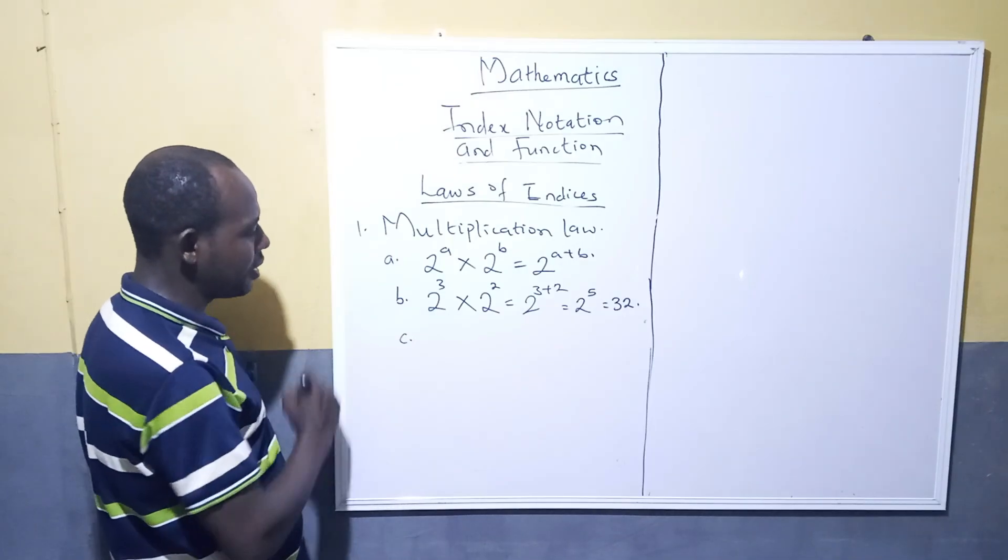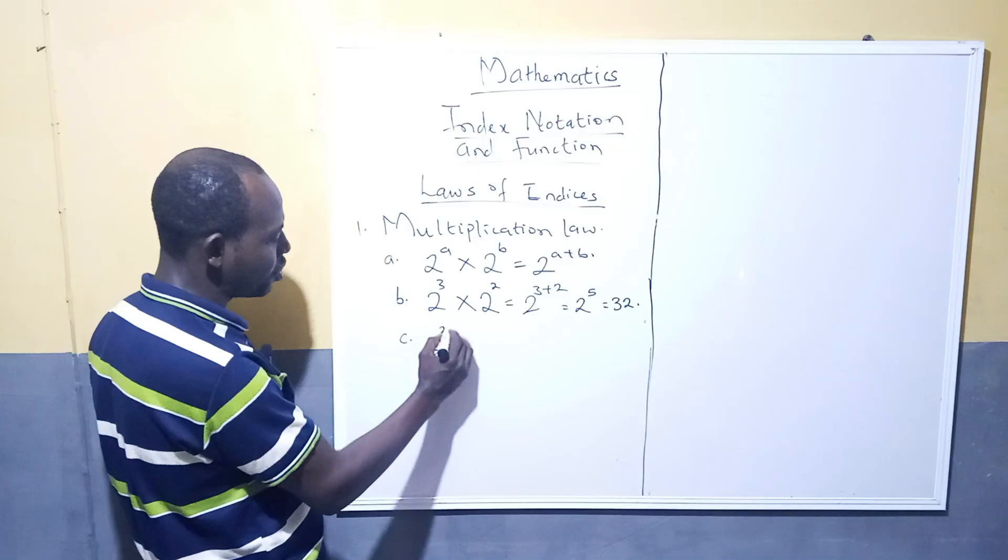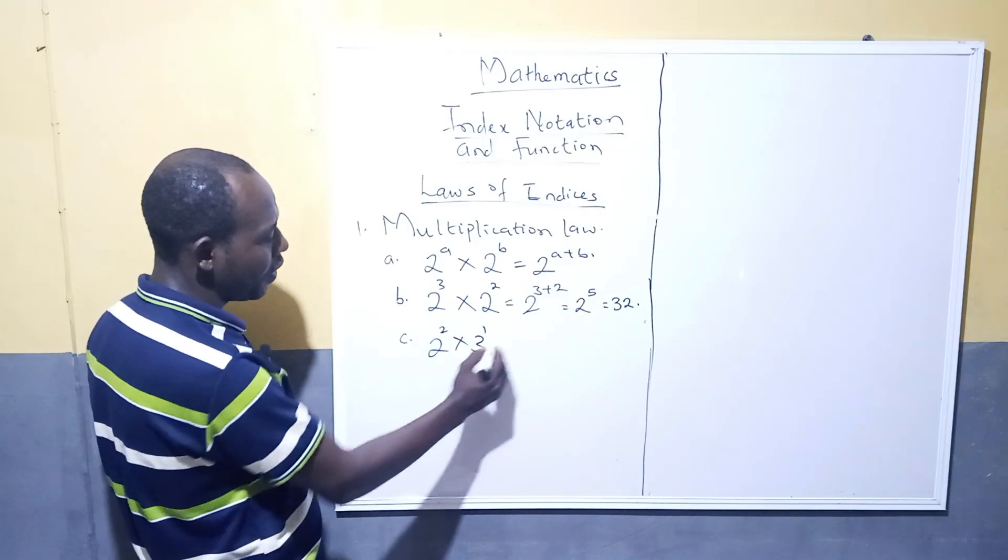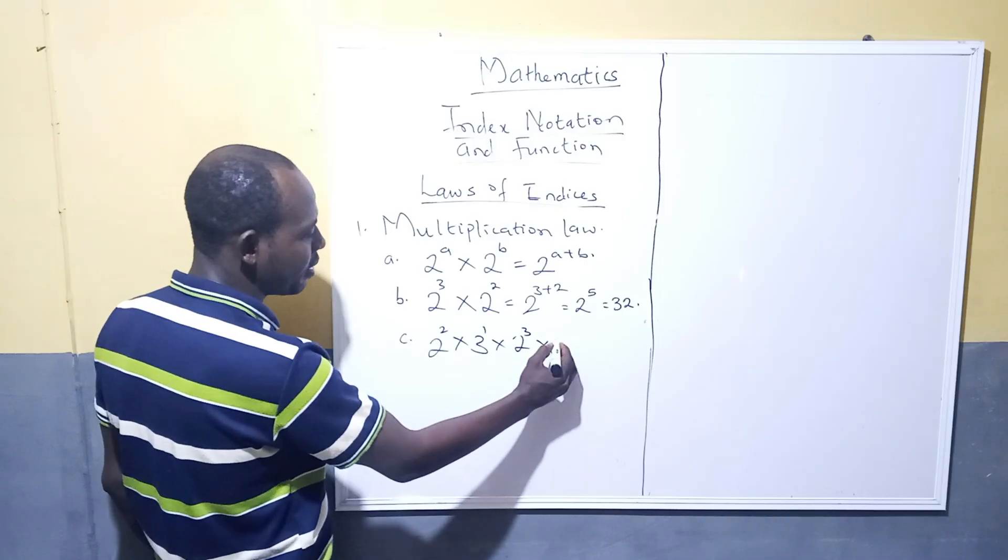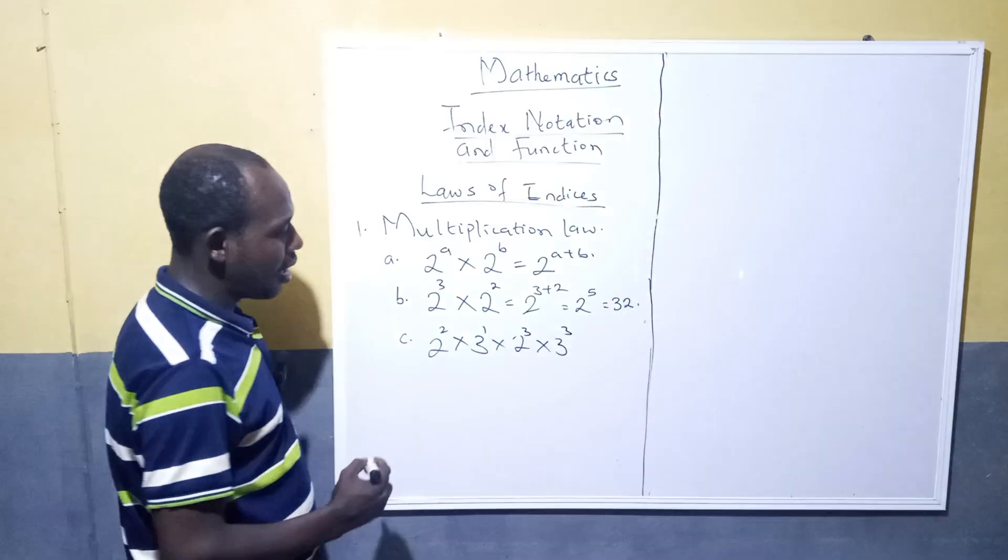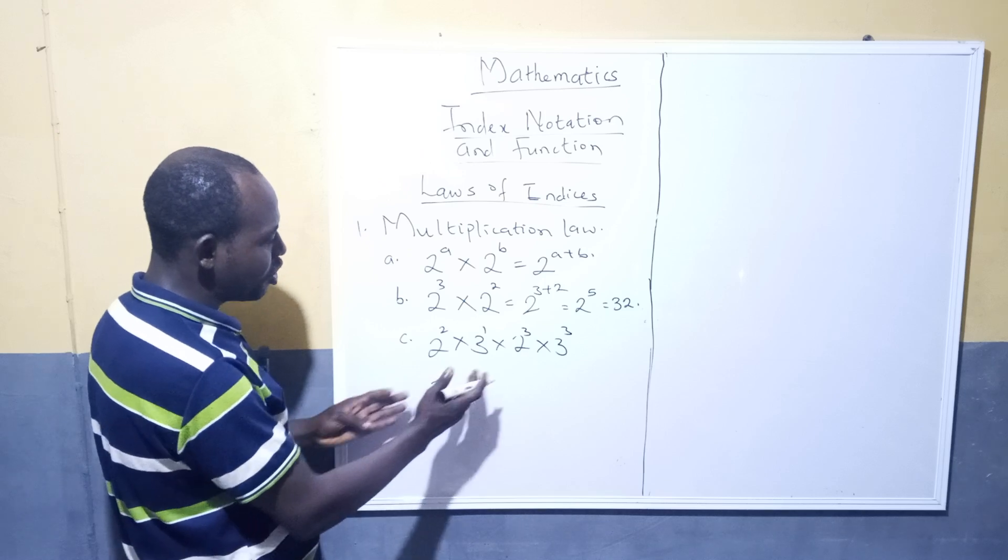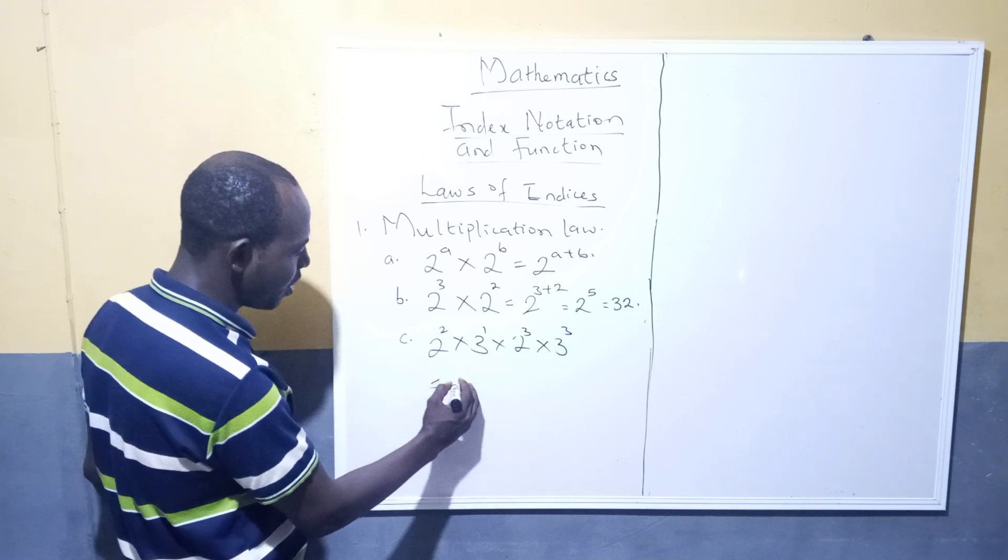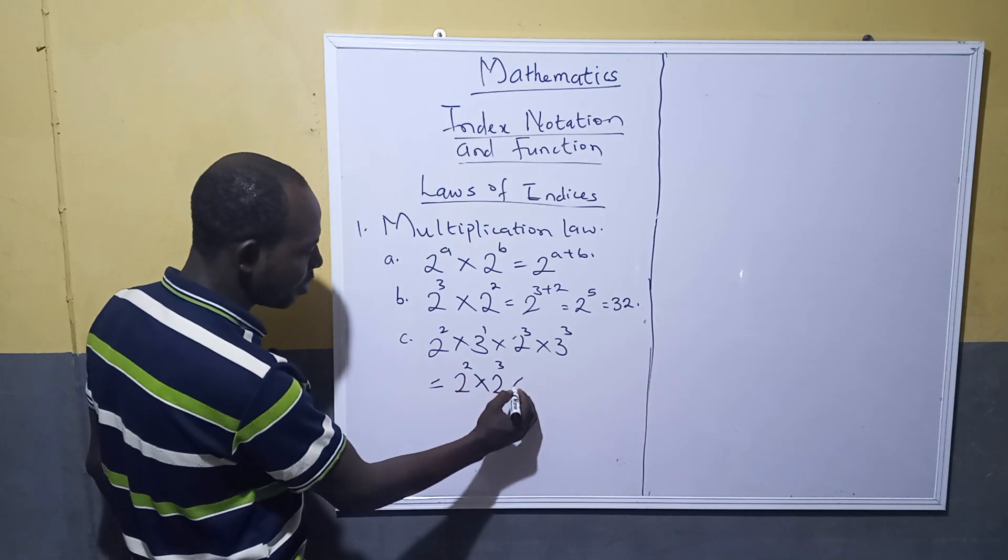Another example, as you may have a number like 2 raised to power of 2 multiplied by 3 raised to power of 3. How will you go about this? Then you can take the two bases that are the same, bring them together.